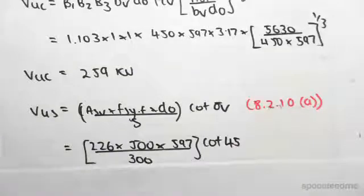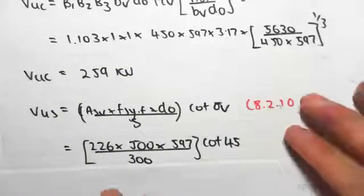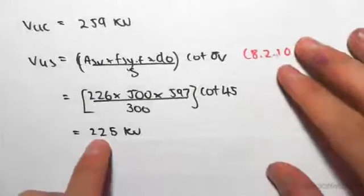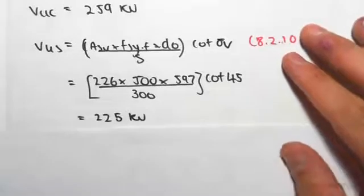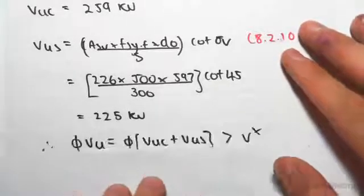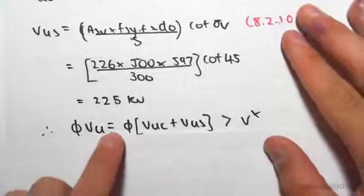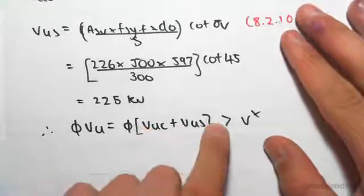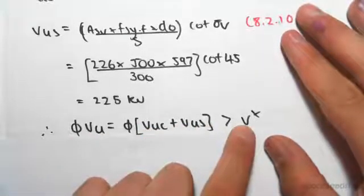So if we were to solve this, we would get an answer of 225 kN. Now we need to check this against our design capacity. So φVU equals φ outside of VUC plus VUS, which needs to be greater than V star, our design capacity.